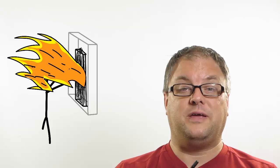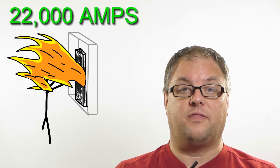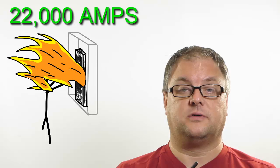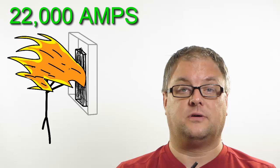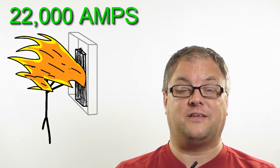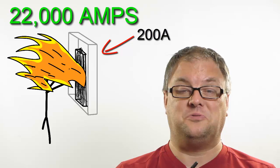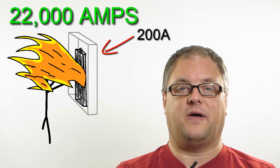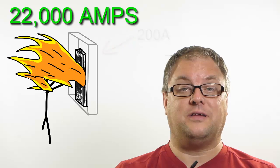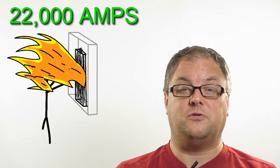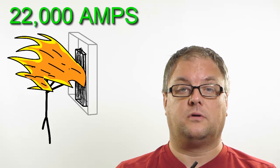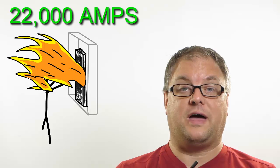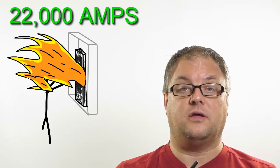A short circuit in a panel can be in excess of 22,000 amps. That's a lot of amps. I can hear some of you saying, well, my panel is only 200 amps, so I don't need to worry about that. Well, in all reality, you do because you can easily come up with 22,000 amps or more in a short circuit in any panel. We will go over that in a different class later on.